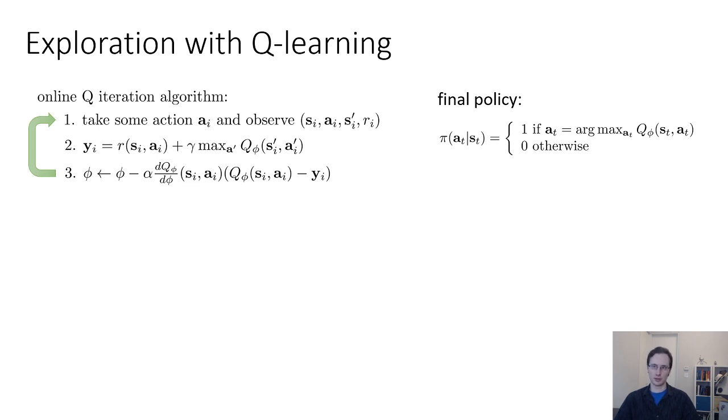So part of why we might not want to do this is that this argmax policy is deterministic. And if our initial Q function is quite bad, it's not going to be random, but it's going to be arbitrary, then it will essentially commit our argmax policy to take the same action every time it enters a particular state. And if that action is not a very good action, we might be stuck taking that bad action essentially in perpetuity, and we might never discover that better actions exist. So in practice, when we run fitted Q iteration or Q learning algorithms, it's highly desirable to modify the policy that we use in step one to not just be the argmax policy, but to inject some additional randomness to produce better exploration. And there are a number of choices that we make in practice to facilitate this.